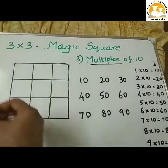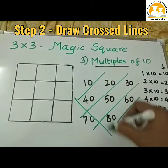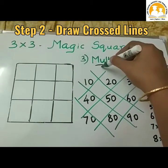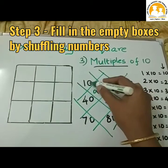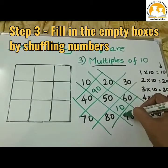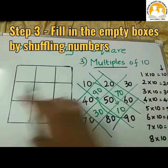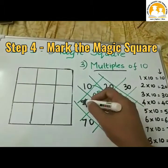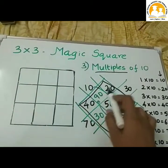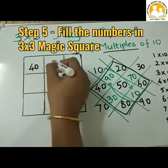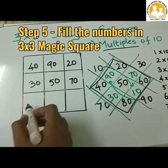We follow the same trick. First, write the multiples of 10: 10, 20, 30, 40, 50, 60, 70, 80, 90. Next, draw the crossed lines. Then fill in the empty boxes by shuffling: 90 comes here and 10 comes here; 30 and 70 are shuffled. The filled magic square has 30, 50, 70 in one row and 80, 10, 60 in another.